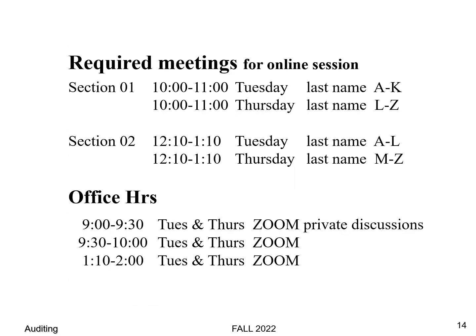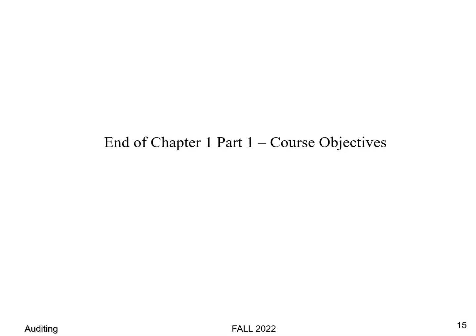We've got required meetings. If you're in the morning section, you'll meet from 10 to 11 — on Tuesday if your last name begins with A through K, on Thursday if it begins with L through Z. If you're in the afternoon section, we meet from 12:10 to 1:10 — on Tuesday for A through L, Thursday for M through Z. I have office hours immediately before and immediately following my class, and from 9 to 9:30 if you want to talk confidentially. You can set up an appointment. Thank you, and I'll see you again pretty soon.